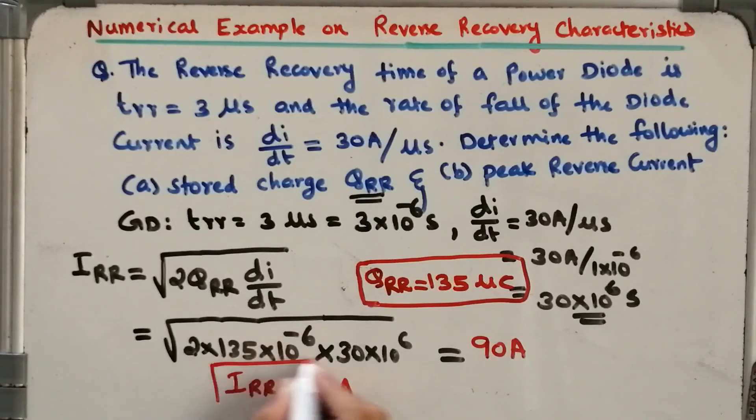Even though the power diode is turned off, this much reverse recovery current goes through the power diode. That is the scenario. So we have computed QRR and IRR. If you have any queries, you can put them in the comment box. Thank you very much for watching this video.